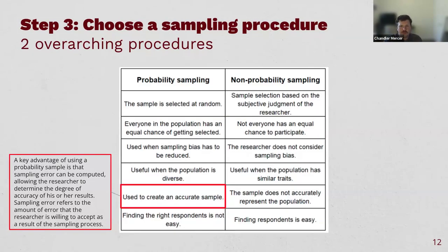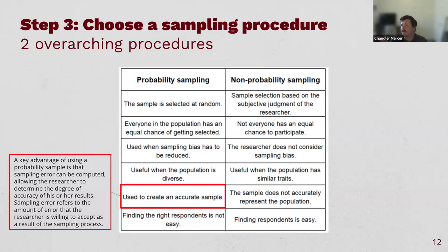Probability sampling means selecting respondents at complete random — no influence by the researcher in how you're actually obtaining survey responses. Everyone in the population has an equal chance of being selected. This is used when you're really worried about biasing the sample. It's most accurate and especially useful when you have a very diverse population and responses are easy to obtain.